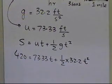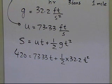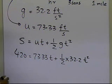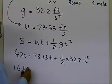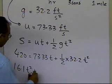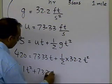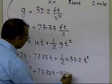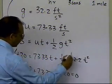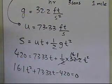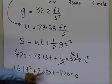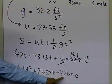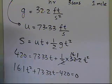If I simplify this and write it in the typical quadratic equation form, I get 16.1t² + 73.33t − 420 = 0, because 16.1 is half of 32.2, and 420 is taken to the other side. So that turns out to be my quadratic equation.